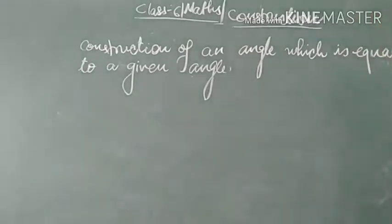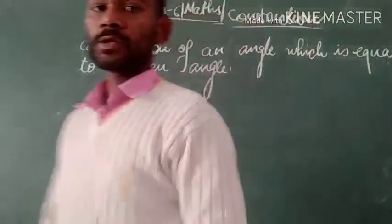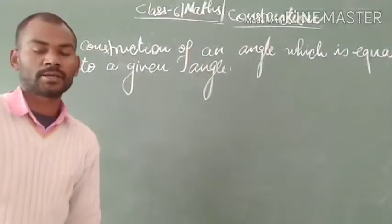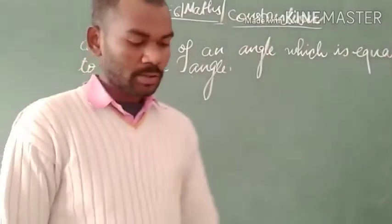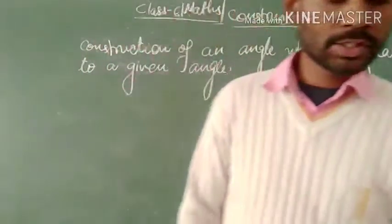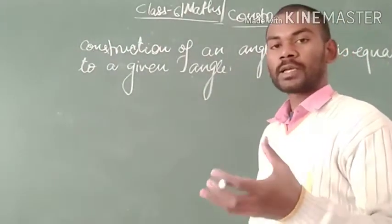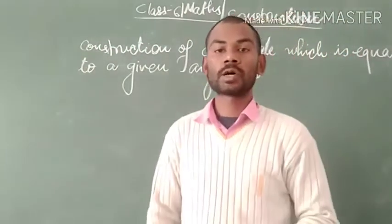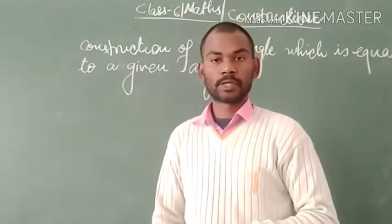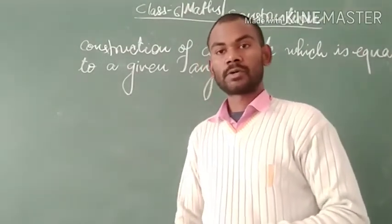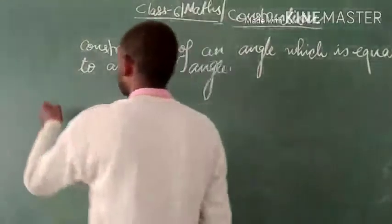Construction of an angle which is equal to a given angle. We shall discuss about this construction — how we shall construct an angle which will be equal to a given angle using ruler and compass. Let's see how we do it.